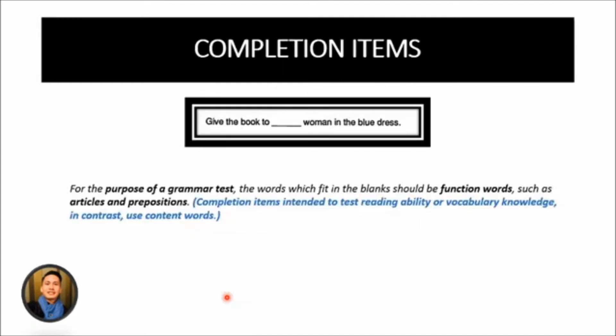The next one here is completion items. Completion items are items in which the testees are asked to fill in the blanks in the sentences. Just like the example here: give the book to blank woman in the blue dress. So, as the taker, you have to decide, as the testee, you have to decide which word is appropriate to fill in that particular blank.